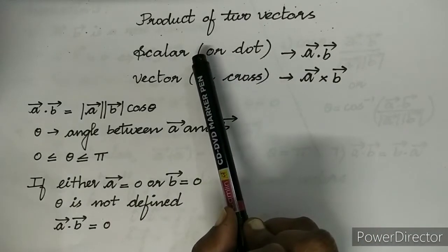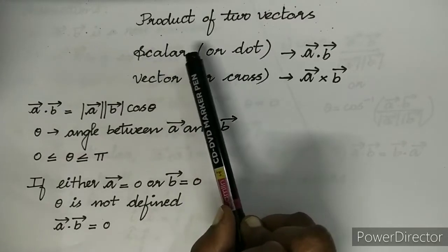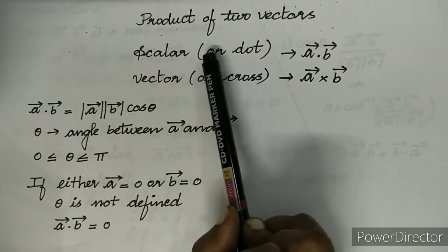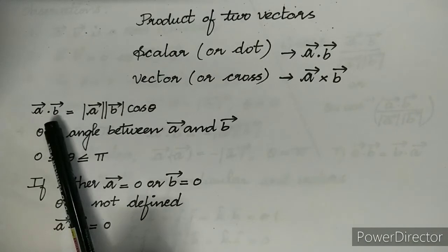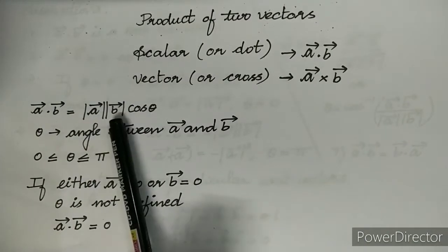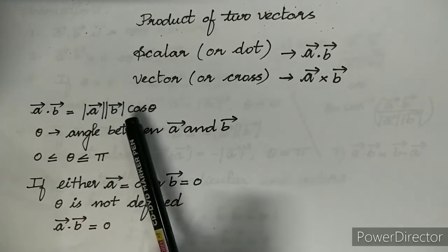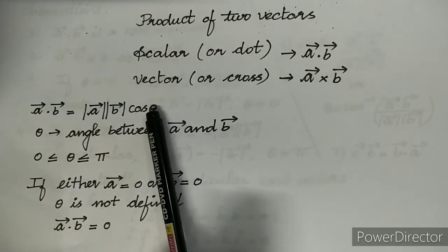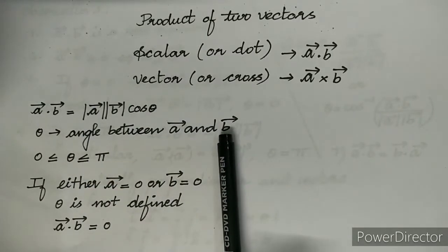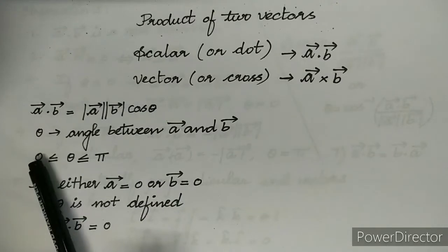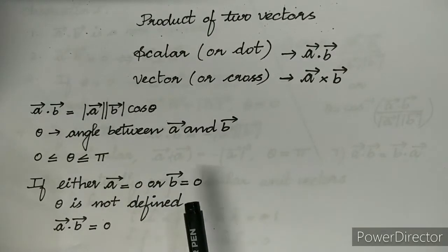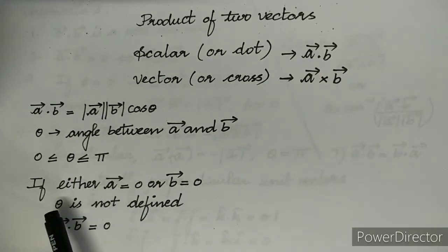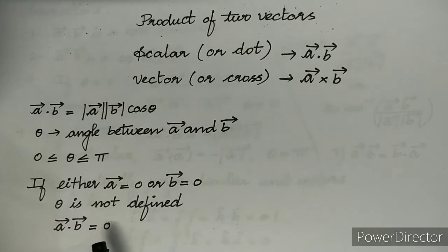In this video we will learn about scalar product or dot product of two vectors. The scalar or dot product of two vectors is defined as A·B = |A||B|cosθ, where θ is the angle between A and B and the value of θ lies between 0 and π. If either A or B is equal to zero then θ is not defined, and A·B will be equal to 0.